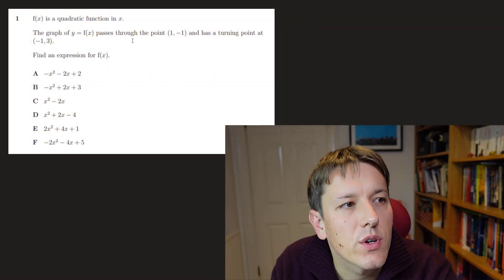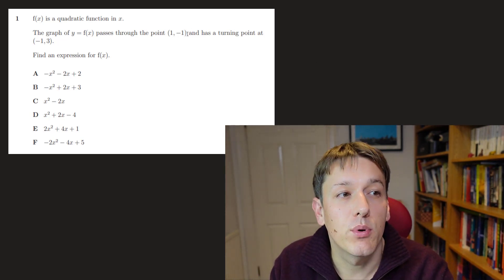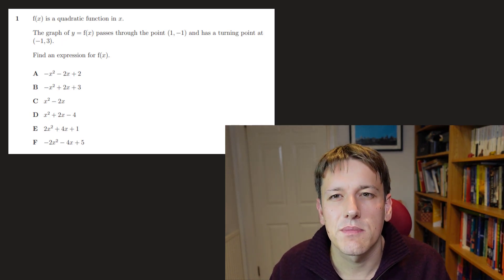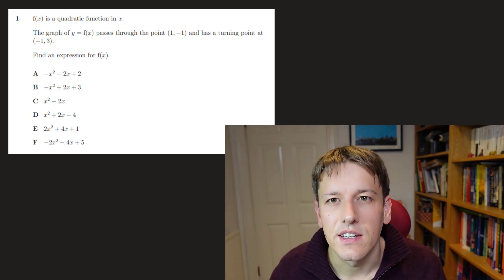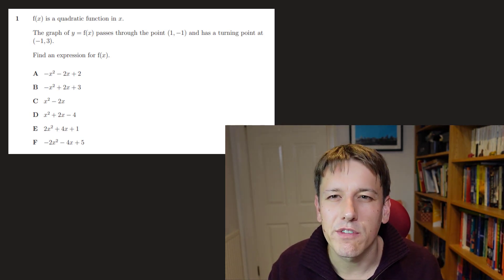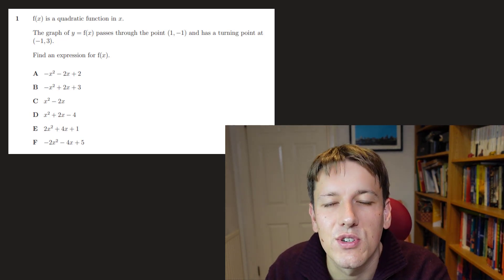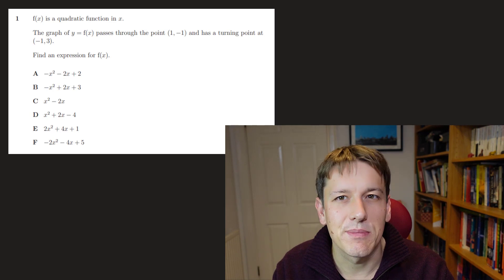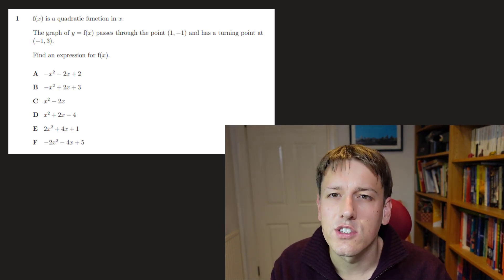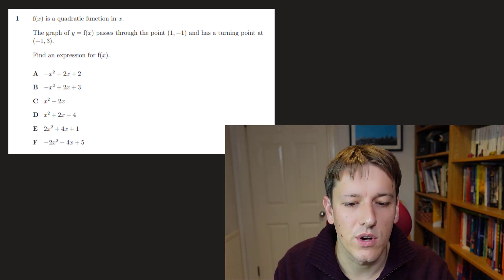So in question one, we've got a quadratic function f(x), and its graph passes through the point (1, -1) and has a turning point at (-1, 3). So one thing we could do is maybe write down a general quadratic and try to find the quadratic by a more general argument. But we do want to remember here this is a multiple choice test, and so I think my instinct here is just to see if I can get the answer by a process of elimination.